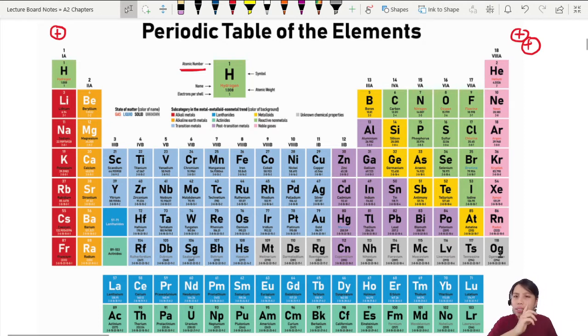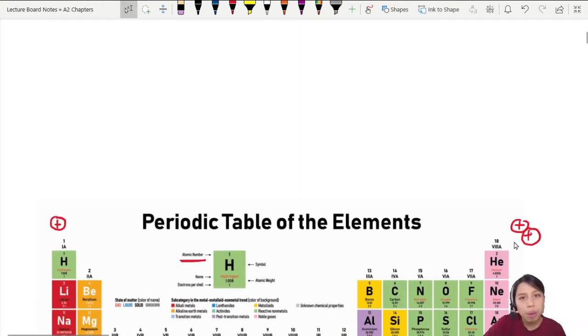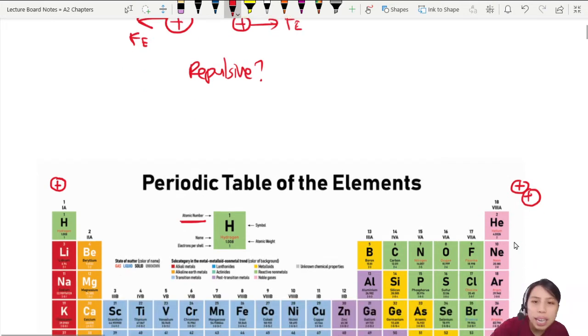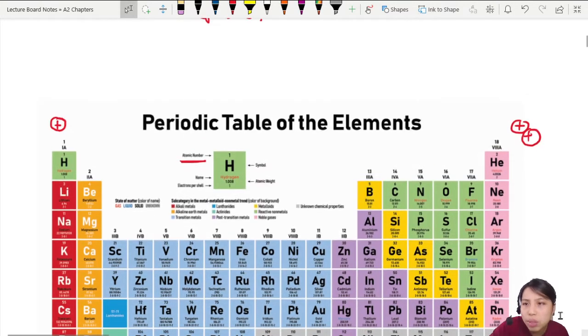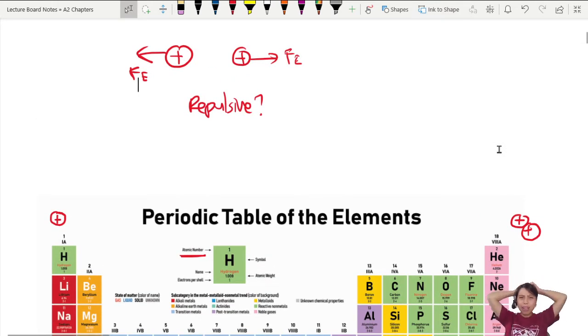But there's something strange here. I thought positive charges repel. When you have a positive charge and a positive charge, they should have a repulsive force. They don't like each other. There'll be an electric force that wants to push them apart. So if this is true, then none of the elements should be able to form. How are they even staying together? How is this even possible? Something is broken, or there's something else we don't know that's happening in the nucleus.